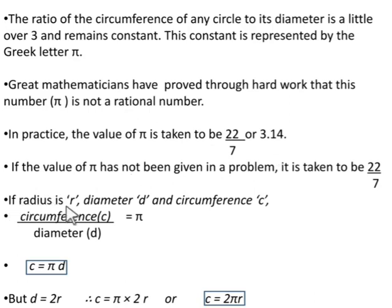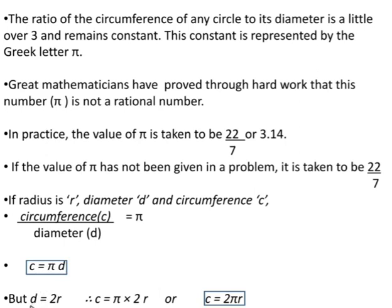Now children, if radius is r, diameter is d, and circumference is c, then the ratio of circumference to the diameter is represented by the constant pi. If you shift d to the right-hand side, you get the formula c = πd, that is circumference equals pi multiplied by d. Since diameter is 2 times the radius, putting 2r in place of d gives c = π × 2r, which simplifies to c = 2πr.